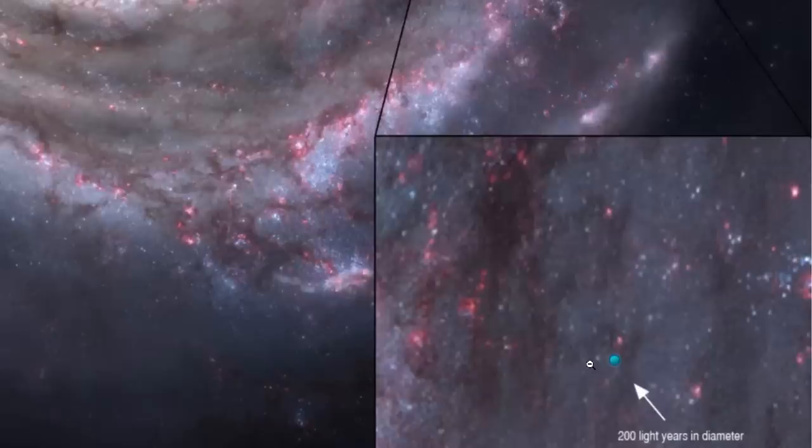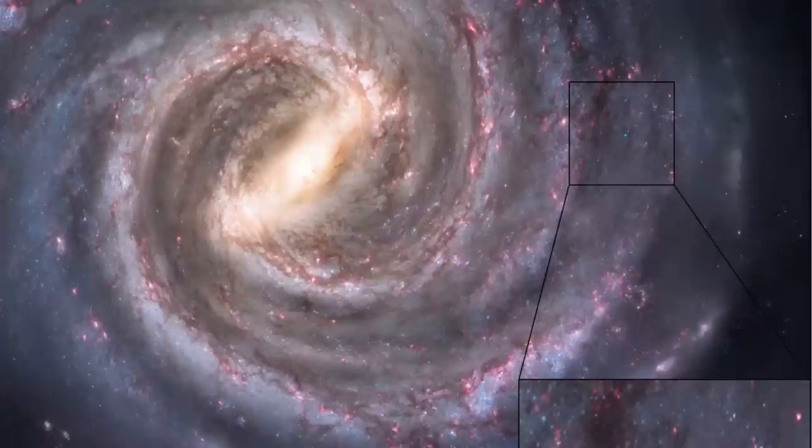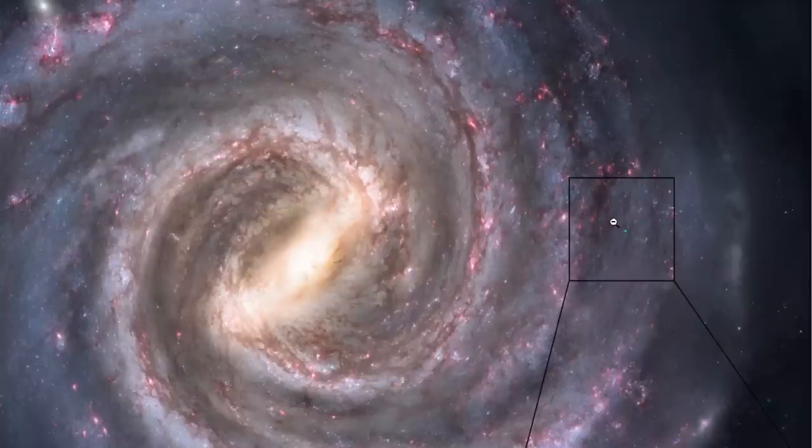And what this little dot here shows you is the diameter of about 200 light years, or essentially the extent of radio transmissions of humanity from the beginning of first radio transmissions roughly around 100 years ago. And that little dot is basically that tiny pixel you see on the right side. This represents about 200 light years in diameter, the extent of radio transmissions from the early 20th century, and that's how all of this compares to the size of the Milky Way galaxy. With this here being roughly around 100,000 light years across.